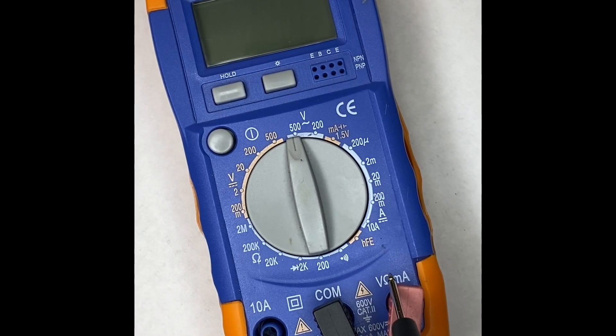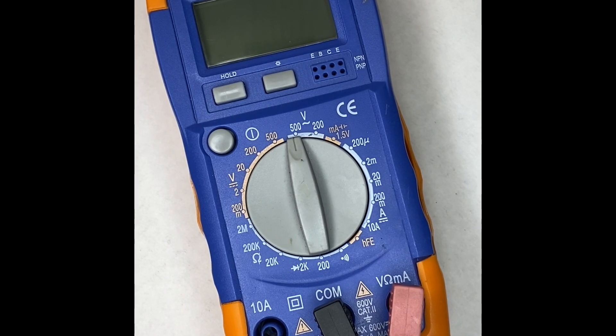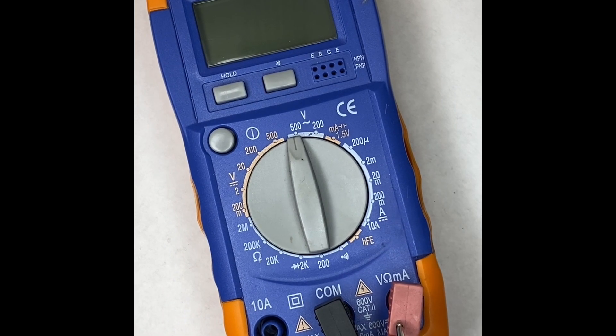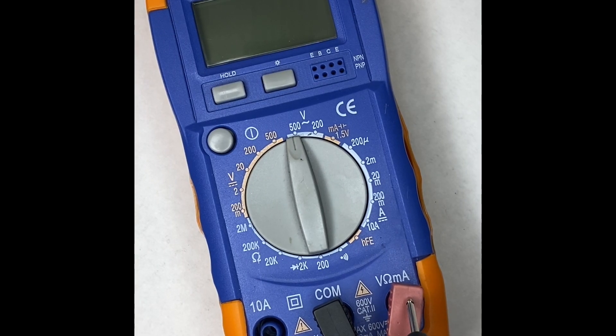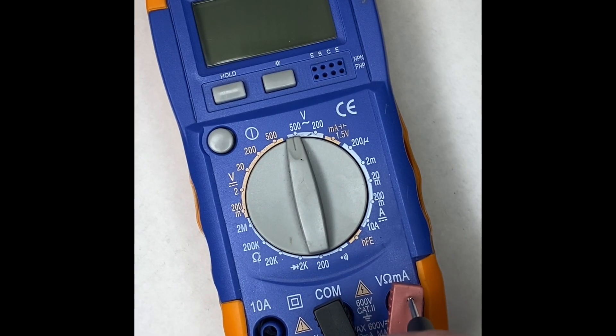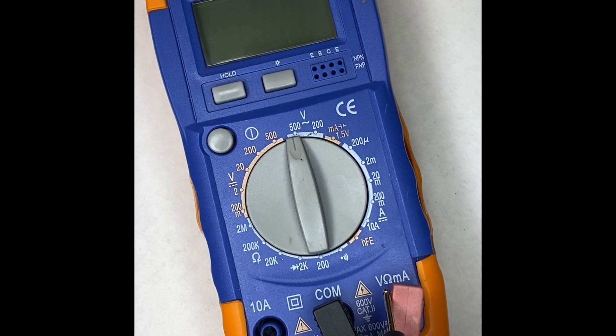...the volts, ohms, and milliamps hole. You can use this one if you want to measure currents higher than milliamps. So most of the stuff that you're going to want to do for troubleshooting guitar effects, you're going to want to be plugged into this V-ohm-omega-milliamp hole.